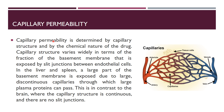Capillary permeability is determined by capillary structure and by the chemical nature of the drug. Capillary structure varies widely in terms of the fraction of the basement membrane that is exposed by slit junctions between endothelial cells. In the liver and spleen, a large part of the basement membrane is exposed due to large discontinuous capillaries through which large plasma proteins can pass.